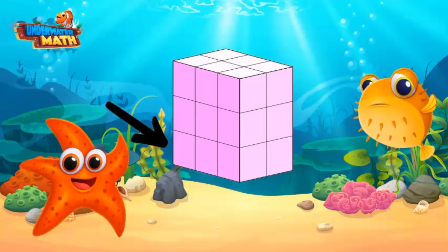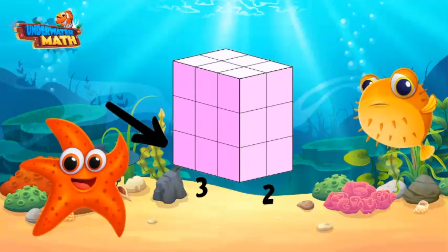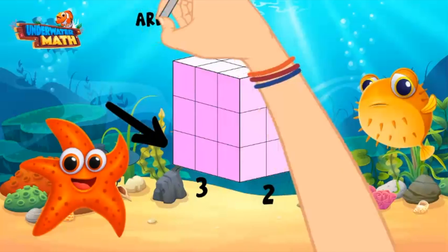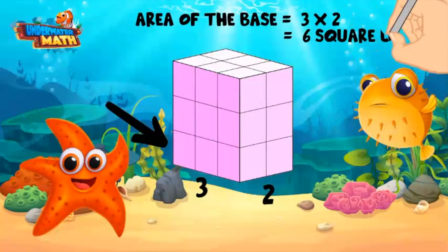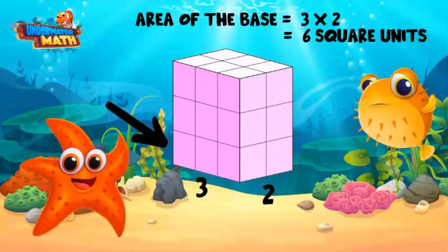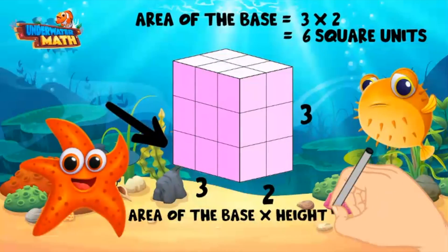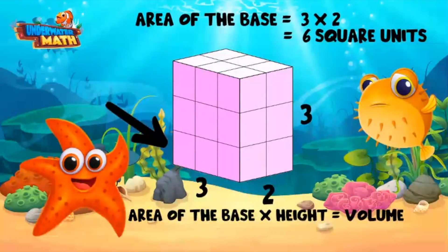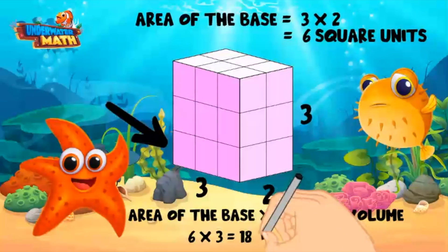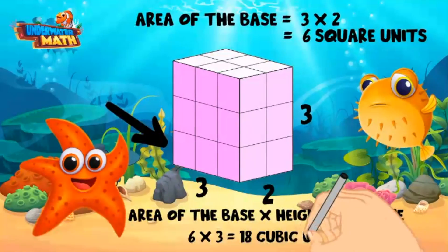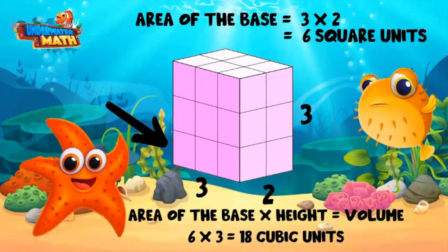Let's give it a try. Here we have a rectangular prism. The base has a width of 2 and a length of 3. To calculate the area, we multiply the width by the length, or 3 by 2, which is 6. Now the prism is 3 units tall. We can multiply the area of the base, 6, by the height, 3, to find the volume. 6 times 3 equals 18, so the volume is 18 cubic units.